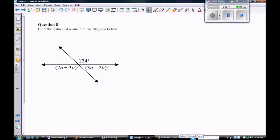It simply says find the values of a and b in the diagram below. So clearly this is some question that involves two variables, so there's a and b, and usually two variables require us to find two equations.